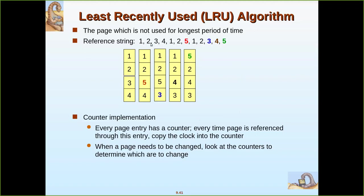So that gives us four page faults. Next, page one comes again — it is already there, so no page fault because it can be executed directly. Then again a reference to page two takes place — it is also already there. Now page five arrives, and we need to decide which page to replace: one, two, three, or four.